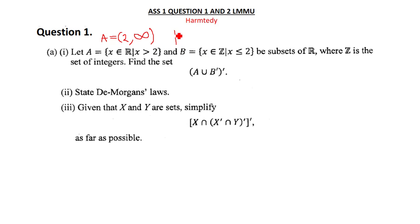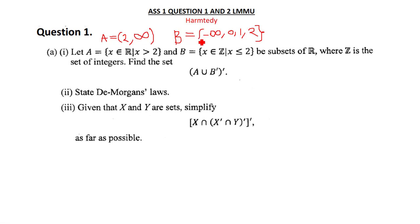Set B is where x is a member of integers and x is less than or equal to two, so we're coming from negative infinity. I'll write it as {..., 0, 1, 2}. This is not an interval, so we use curly brackets. The bracket notation shows that two is part of this set. Now they ask us to find A union B complement, with a complement outside.